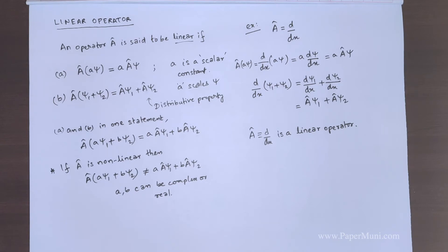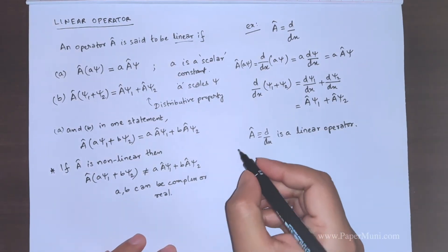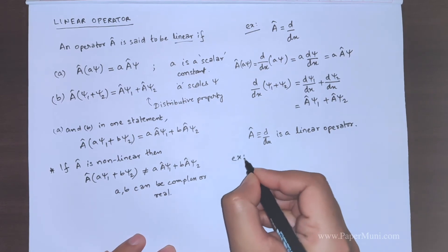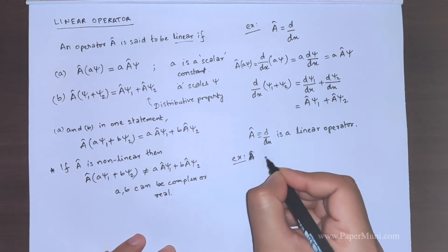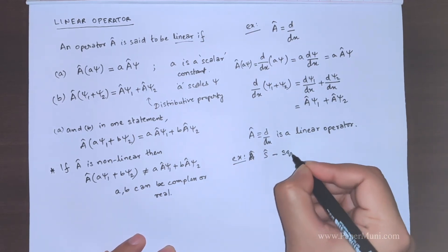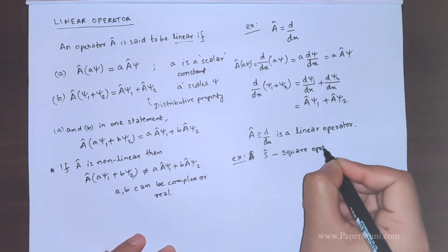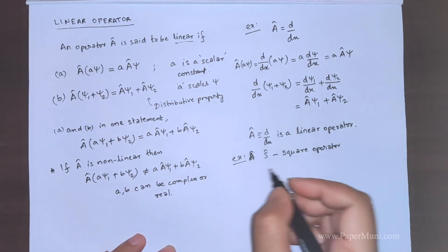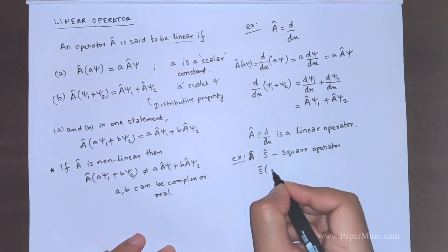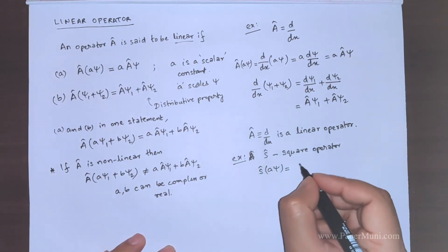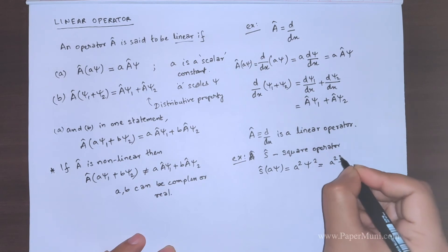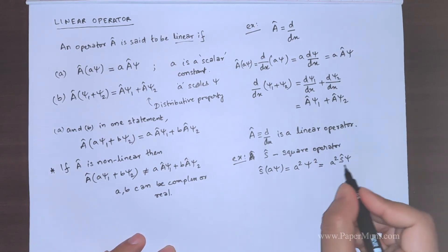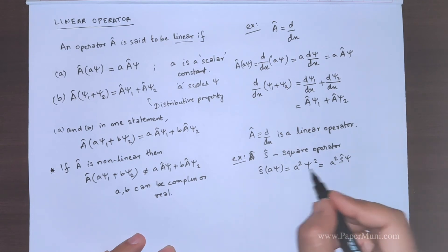What you should do is you should pause the video and try it for yourself. So, I will give you another example. A is also represented by S. We say that there is a square operator. Square operator, what it does, we define it as whenever it operates on some quantity, it squares the quantity. It will square both wave function and the scalar quantity. Or we can write like this. This is equivalent to saying that S operates on psi and A square is multiplied.